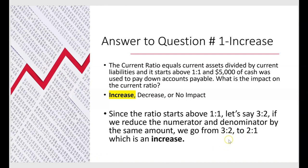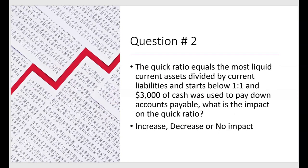We went from one dollar and fifty cents of current assets for every one dollar of current liabilities — from 1.5 to one — up to two dollars of current assets for every one dollar of current liabilities — two to one. The ratio increased. It didn't have much to do with accounting or auditing; it was mostly math. At i75 we always try to anticipate the next question.